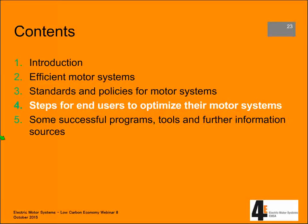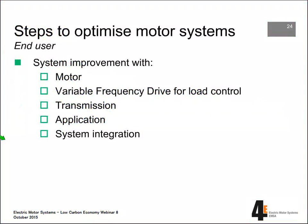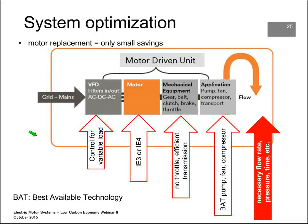For the end user, there are steps to optimize their motor system. The end user has to focus on the different elements of the motor system: the motor, VFD, load control, transmission, the application itself, and last but not least, integrating those components into an efficient system. For each component, there are different measures.